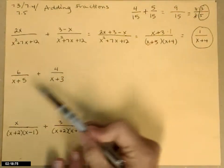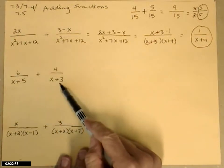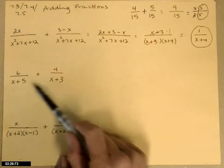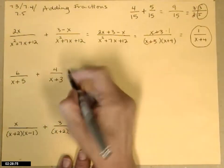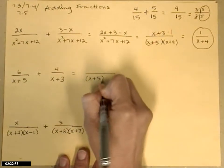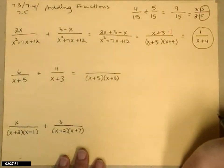The next example, again I'm adding two fractions, but this time the denominators are not the same. It's not just x plus 8 or x plus 15. You actually need the two factors: x plus 5 times x plus 3.